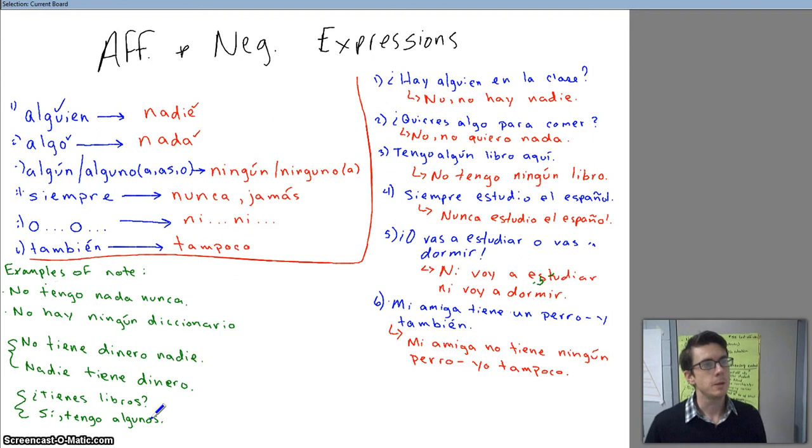¿Tengo algún libro aquí? No tengo ningún libro. I have some book here. I don't have none book. Siempre estudio el español. Nunca estudio el español. I always study Spanish. I never study Spanish.